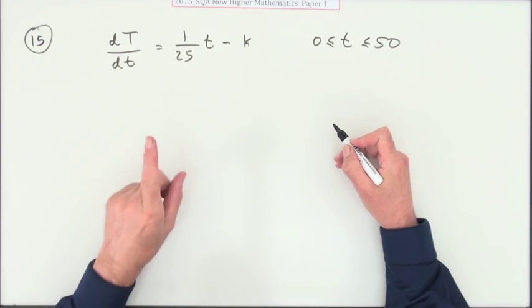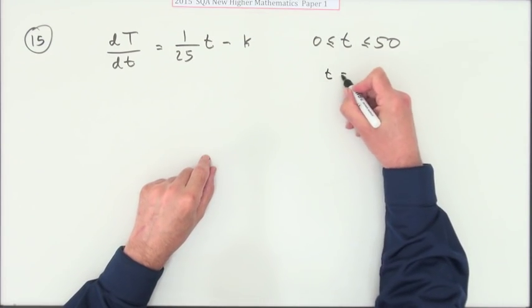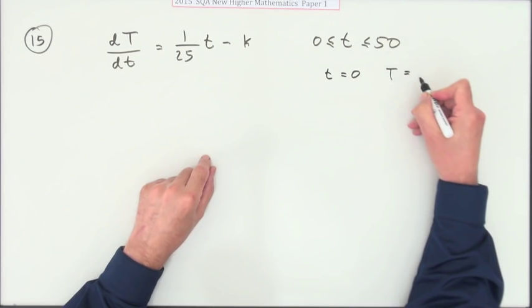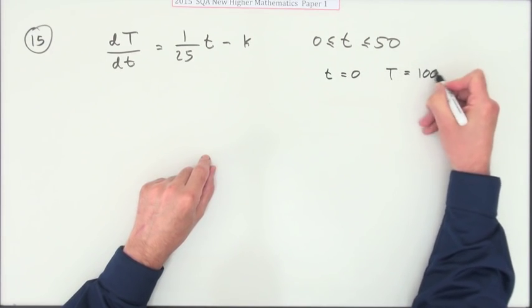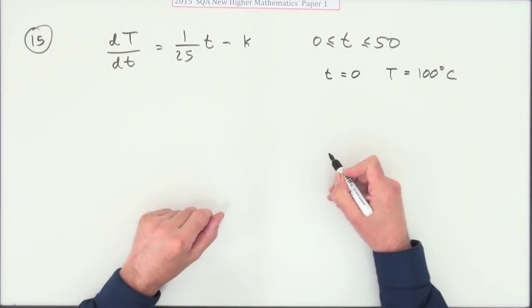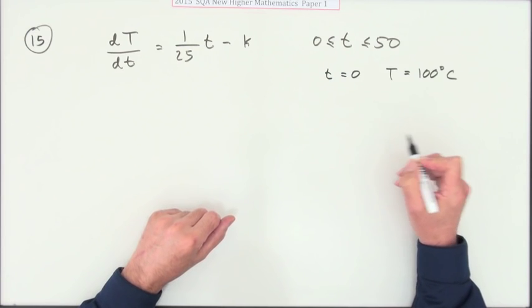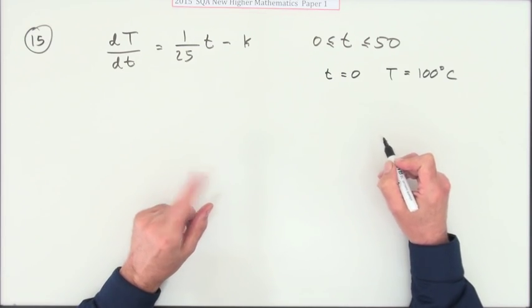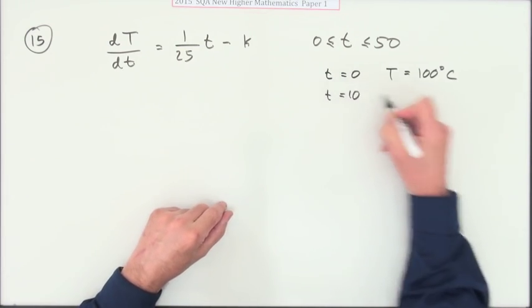It gives you a couple of bits of information. It says that initially, when the time is zero, the temperature was 100 degrees - that was fresh out of the pot. Then it said 10 minutes later, so when t is 10, the temperature is now 82 degrees.